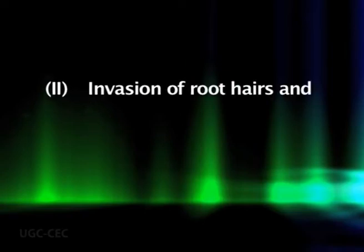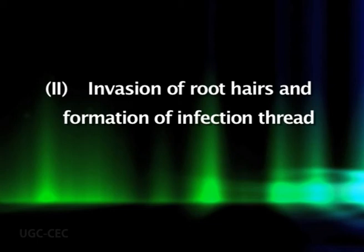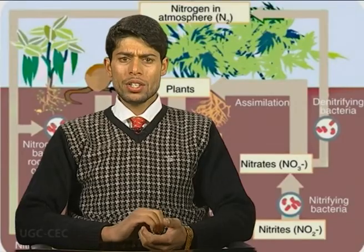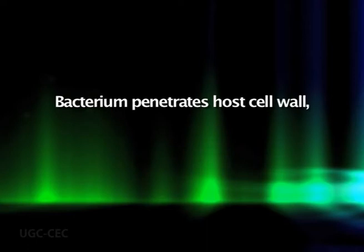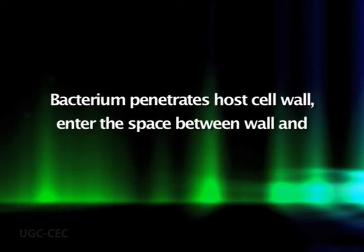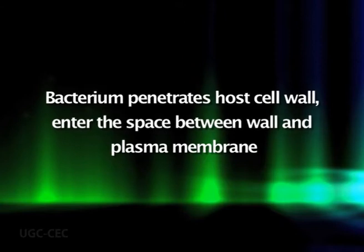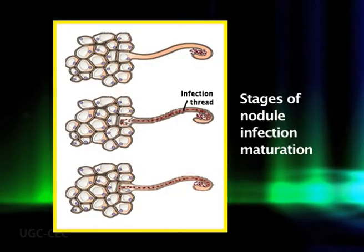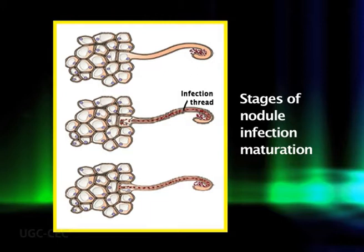After colonization and nodulation, let's take the invasion of root hairs and the formation of the infection thread. The bacterium penetrates the host cell wall in order to enter the space between the wall and the plasma membrane. Once the rhizobia reaches the outer surface of the plasma membrane, tip growth of the root hair ceases and the cell membrane begins to invaginate. The result is a tubular intrusion into the cell called the infection thread, which contains the invading rhizobia. The infection thread elongates until it reaches the base of the root hair cell.